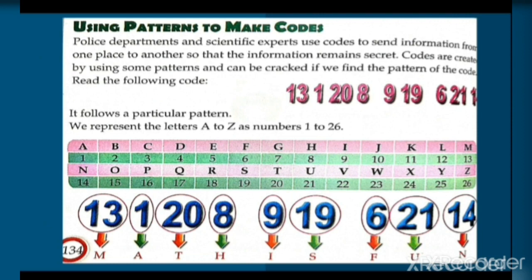It follows a particular pattern: we represent the letters A to Z as numbers 1 to 26. Jaise A=1, B=2, C=3 aur aise hi Z tak. Agar hum 'MATH IS FUN' likhna chahein toh: M=13, A=1, T=20, H=8. Isi tarah poora code ban jaata hai.